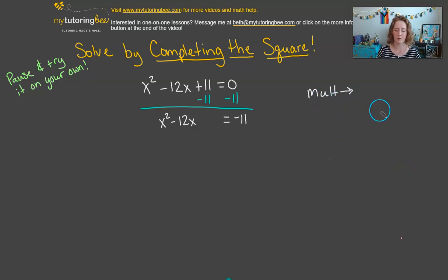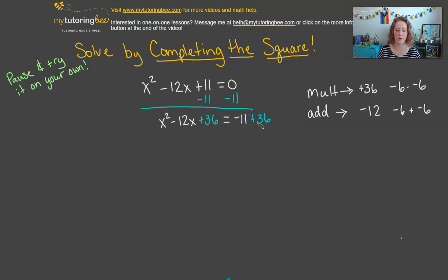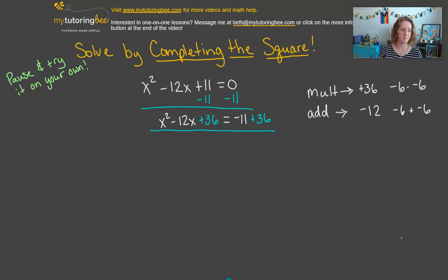Now we look at the middle term — we want a number times itself that also adds to give us negative 12. Two numbers that add to make negative 12 are negative 6 plus negative 6. When we multiply negative 6 times negative 6, we get positive 36. That's the third term we place in the third position, and we must add 36 to the other side. Forgetting that step is a common mistake — it's important to keep the equation balanced.